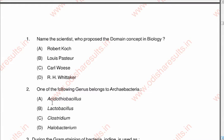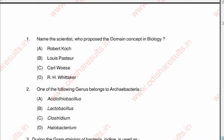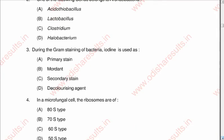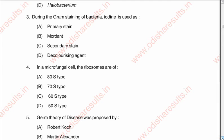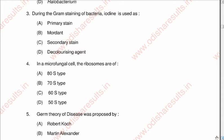The correct option is D: Halobacteria. Question number three: During the gram staining of bacteria, iodine is used as A: a primary stain, B: a mordant, C: a secondary stain, D: a decolorizing agent.